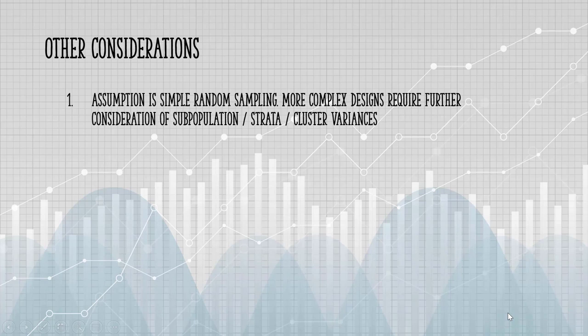A few final notes. The formulas and tables assume that your sampling design involves simple random sampling. If you have a more complex design, like stratified random sampling, it gets a little more complicated and you must take into account variances within subpopulations, strata, or clusters.